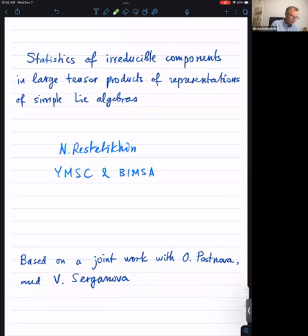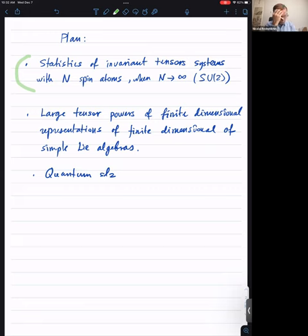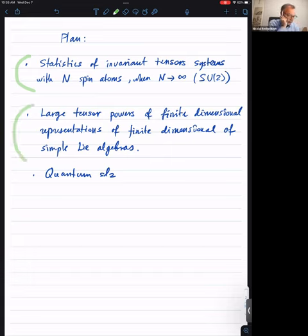The plan is as follows: first I will say a few words about the statistics of invariant tensors in systems with N spin atoms when the number of atoms goes to infinity — this is the case of representations of SU(2). Then the more mathematical part: a similar problem about the statistics of irreducible finite-dimensional representations in large tensor products of simple modules over simple algebras. Then, if we have time, the quantum sl2 piece.